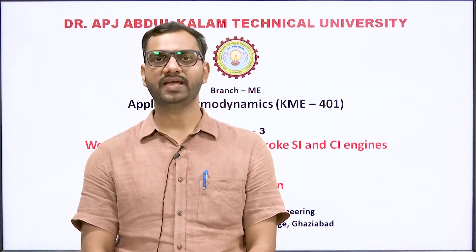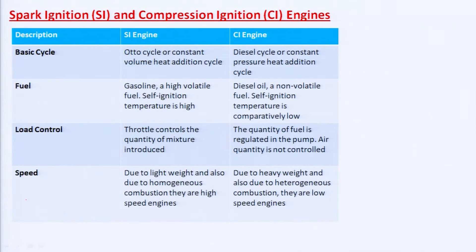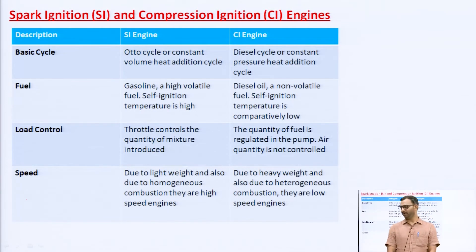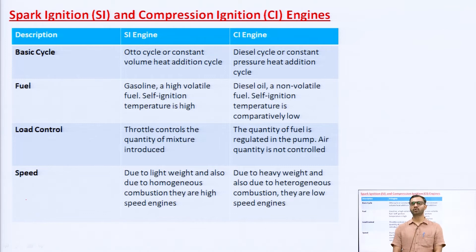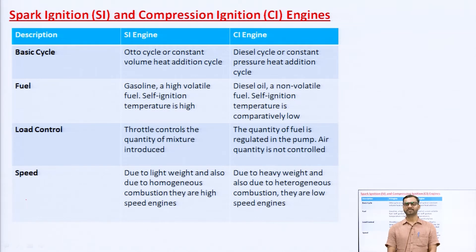This is lecture number 3 of the subject Applied Thermodynamics. In this lecture, I will discuss the working of 2-stroke and 4-stroke SI and CI engines. SI means spark ignition engine, means petrol engine, whereas CI means compression ignition engine, means diesel engines. First I will give a brief introduction about SI and CI engines, then 2-stroke and 4-stroke cycle engines, after which I will start the working of SI and CI engines.